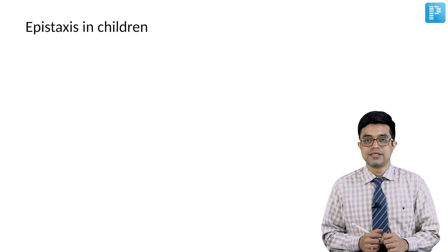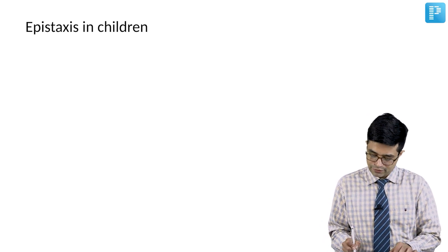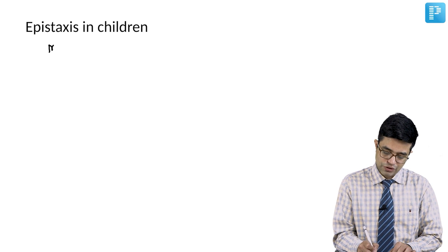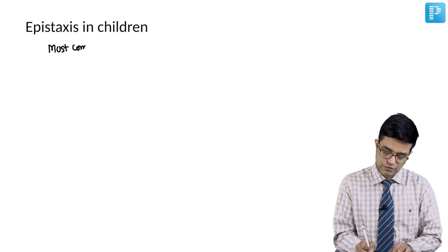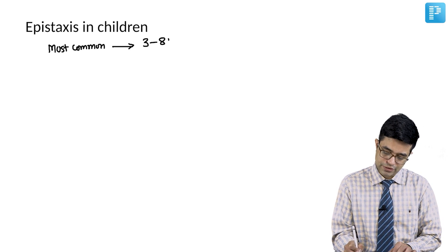Third, we come to epistaxis in children. Bleeding from the nose is called epistaxis. What is the most common age for epistaxis in children? The most common age for epistaxis is 3 to 8 years.